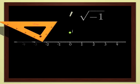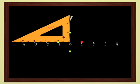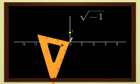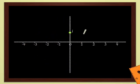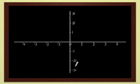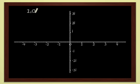But once we have the courage to leave the line, everything else is easy. We can represent 2i, 3i, and so on. Each point in the plane represents a complex number, and conversely, each complex number defines a point in the plane. Points in the plane become numbers in their own right.